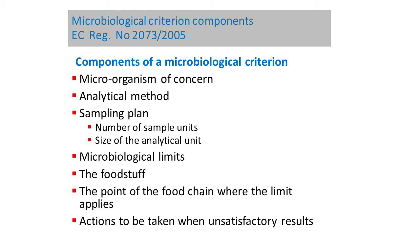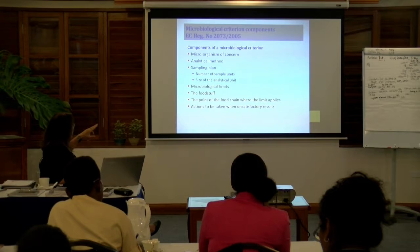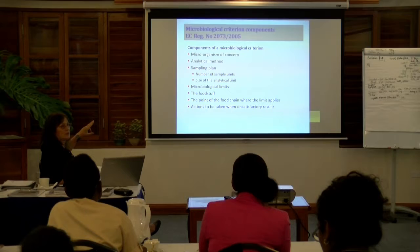The microbiological criteria comprise the microorganism of concern, the analytical method, the sampling plan, number of sample units you take, size of the analytical unit, the microbiological limits, the foodstuff to which it concerns, the point of the food chain where the limits apply, and the action to be taken in case of unsatisfactory results.